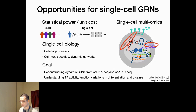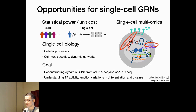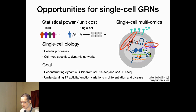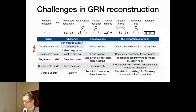We also have different measurements of each individual cell, allowing us to view different aspects and hopefully improve reconstruction accuracy. The goal of this talk is to reconstruct dynamic gene regulatory networks from these two data modalities and also to understand how transcription factors function and how varying differentiation and disease affect gene network reconstruction.